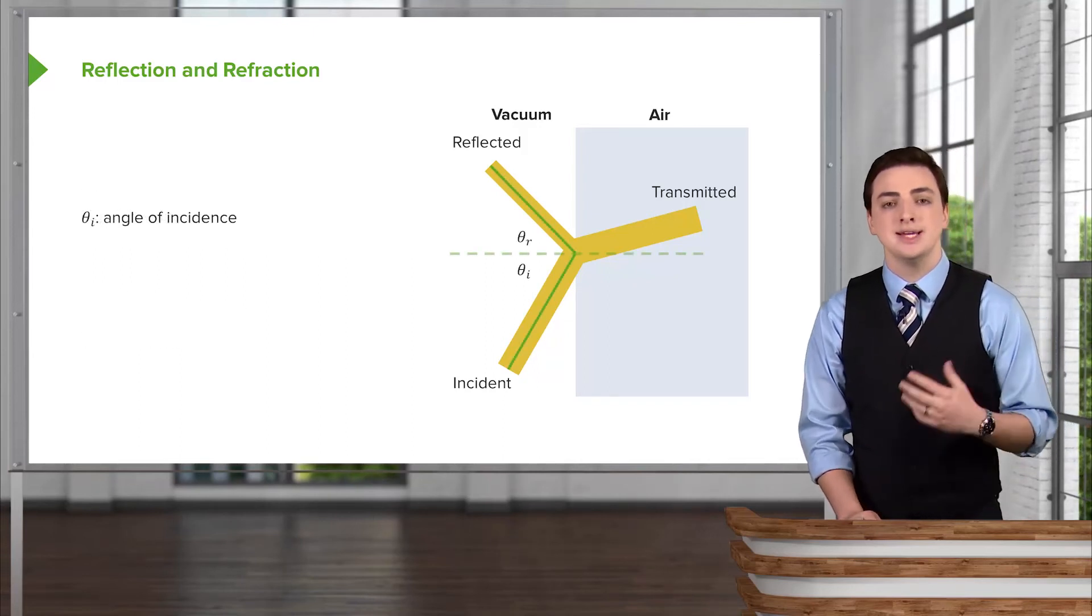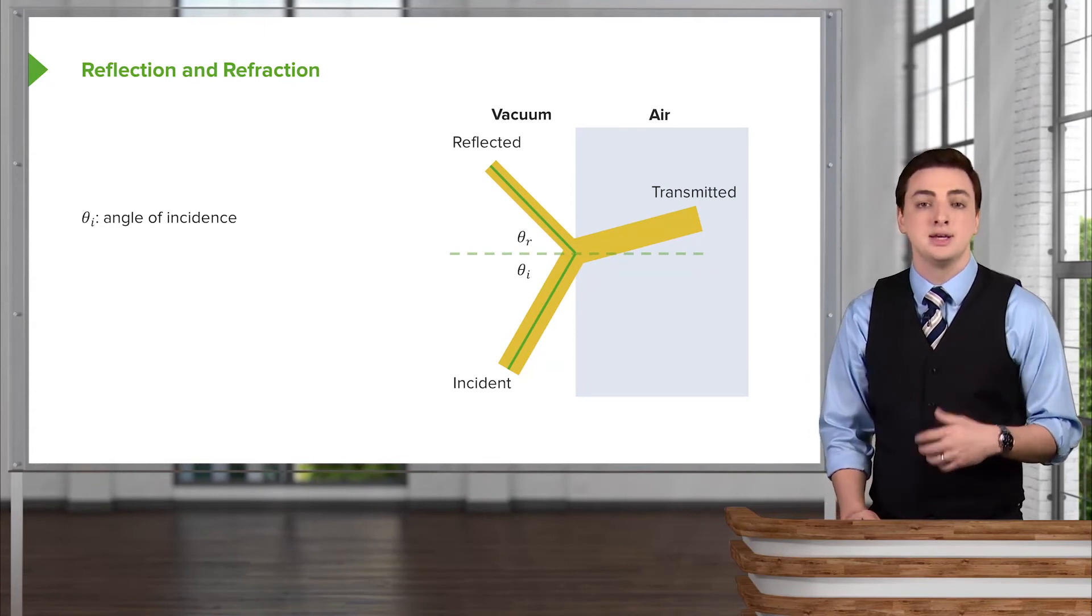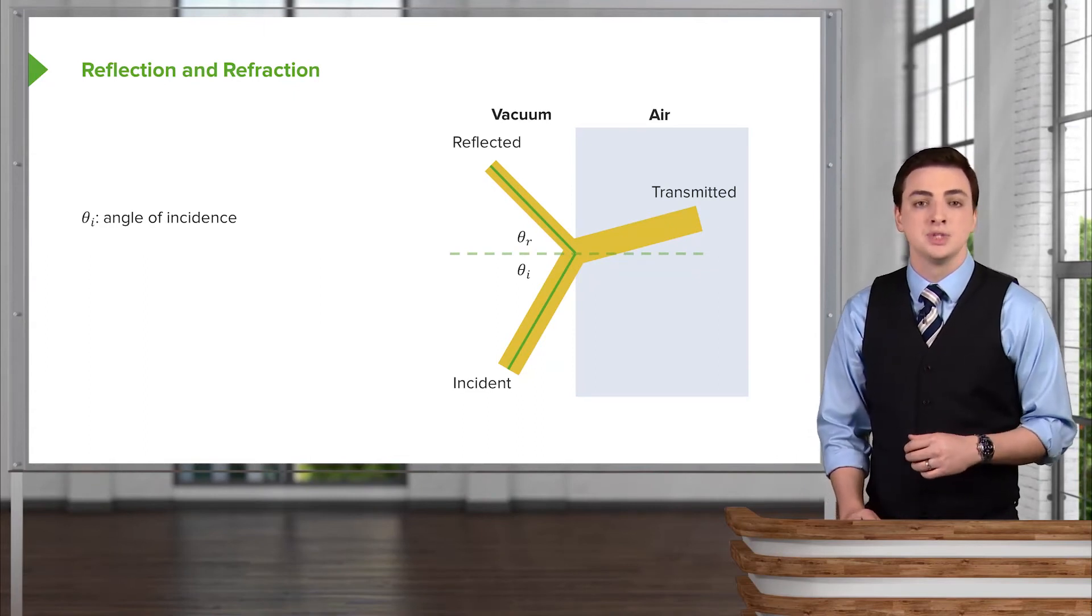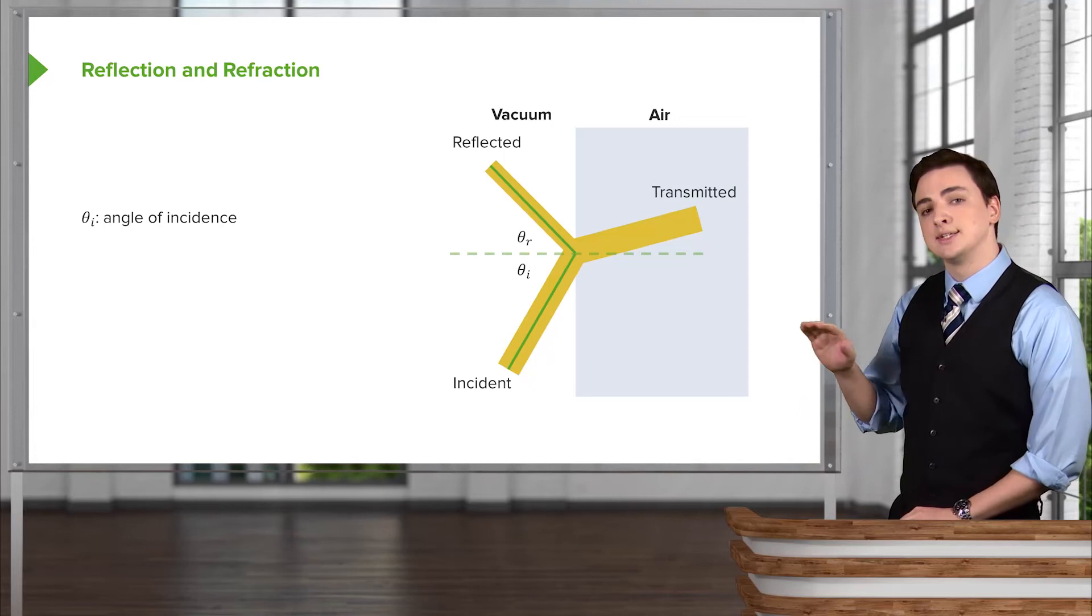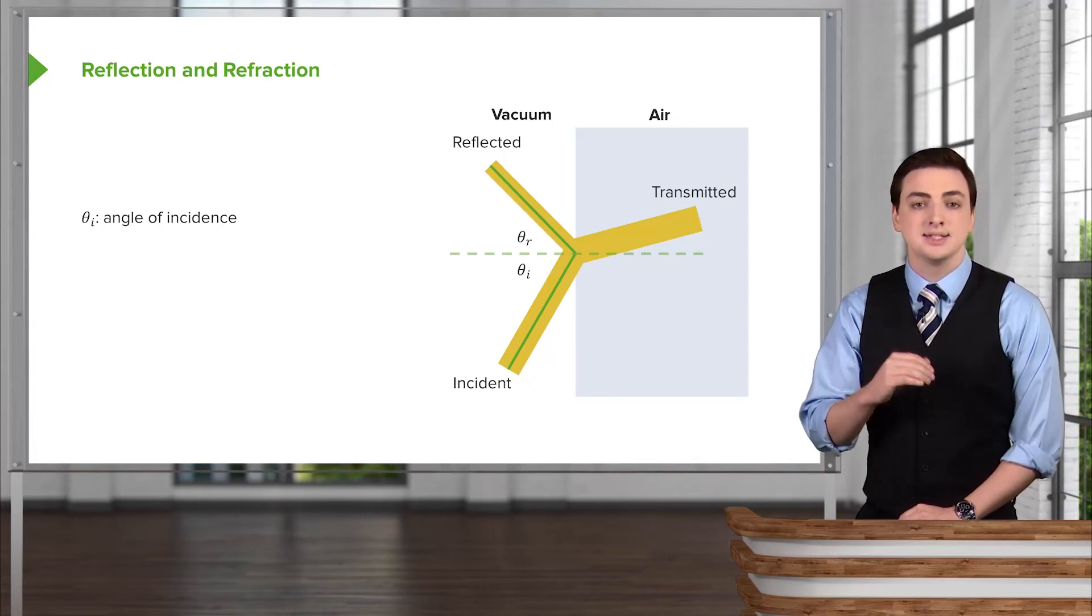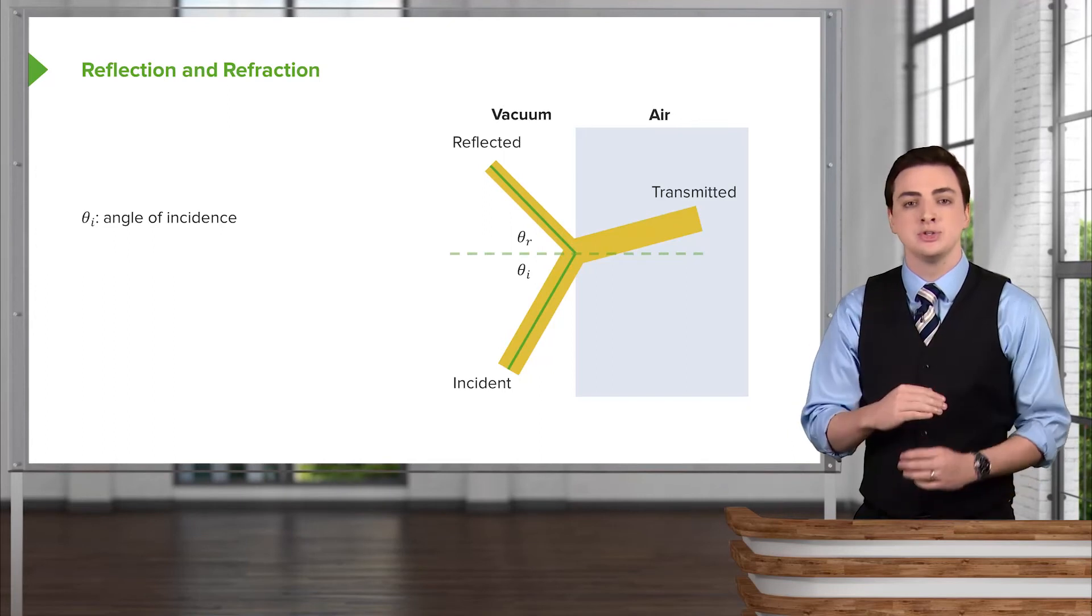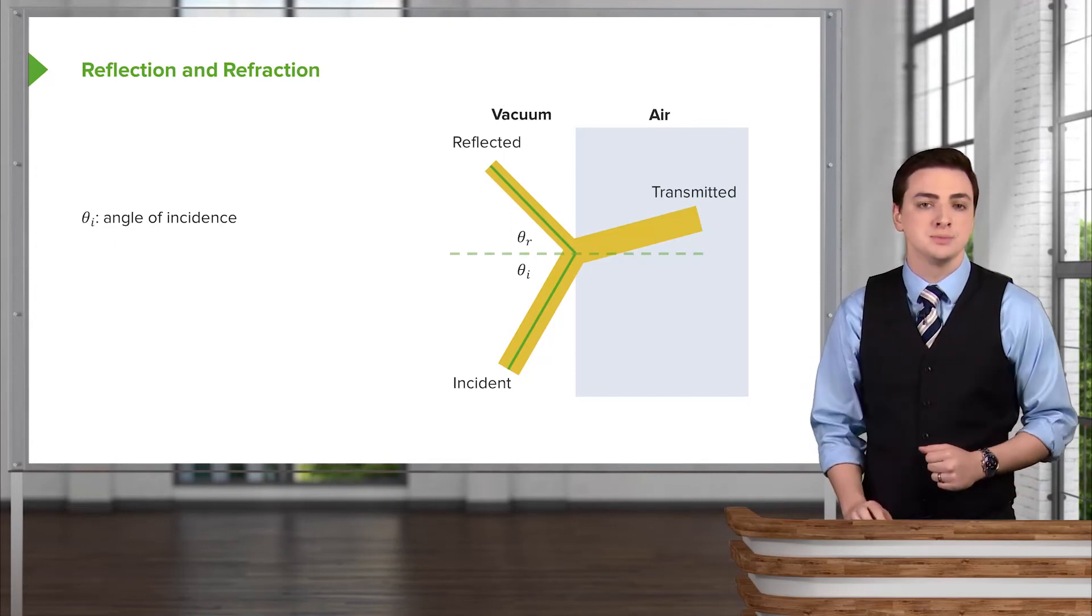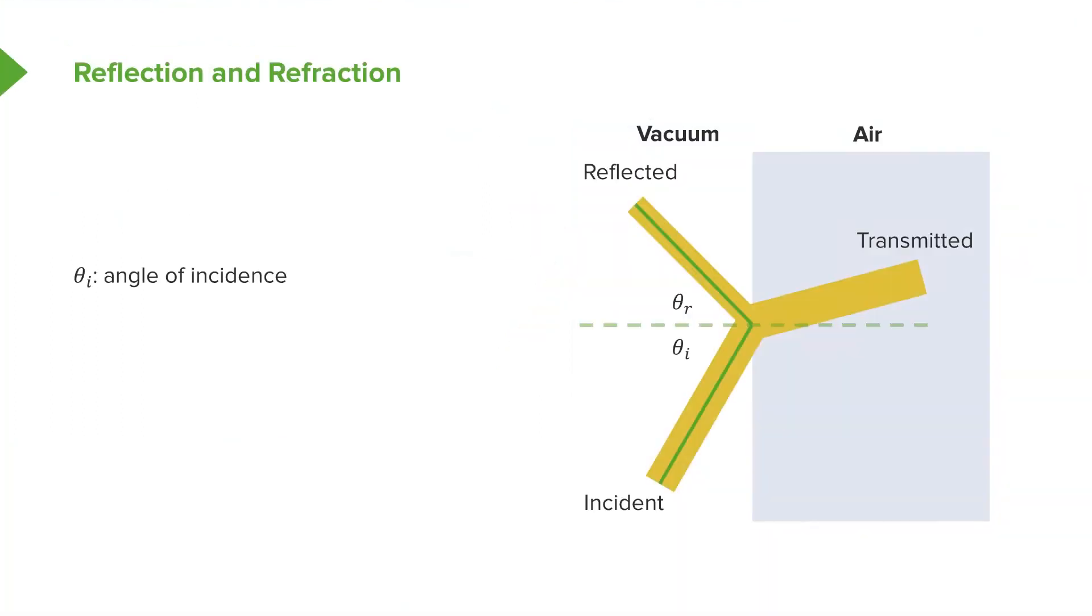What we do to describe the incident and reflected or transmitted beams as they go into this medium is first draw an axis, this dotted green line here. This axis is normal to, or perpendicular to, the surface between the two mediums. Given this line and knowing the incident ray and the exiting ray, the reflected ray,